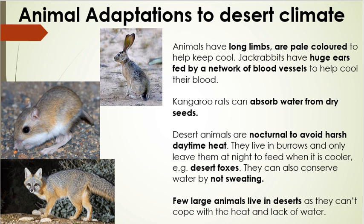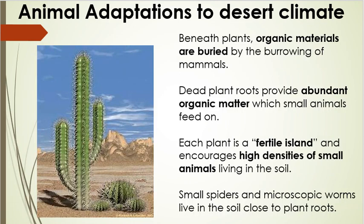Very few large animals live in the desert as they can't cope with the heat and lack of water. The bigger an animal is, the more energy it takes to move around and the hotter it gets. The only real large animal in the desert is the camel, which has special adaptations such as storing water. Mainly small animals — jackrabbits, kangaroo rats, and desert foxes — live in the desert.